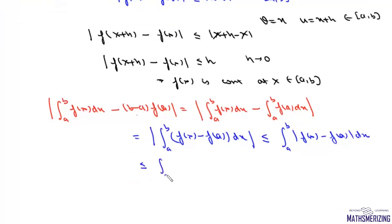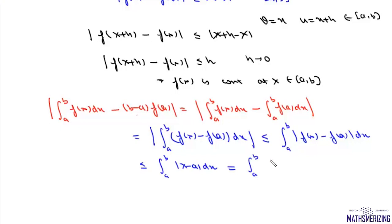In the interval [a, b], x is always greater than a, so we can write this as the integral from a to b of (x - a)dx, which equals [(x - a)²/2] evaluated from a to b.